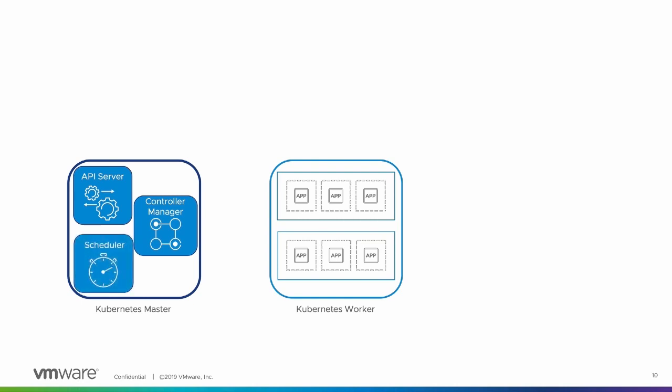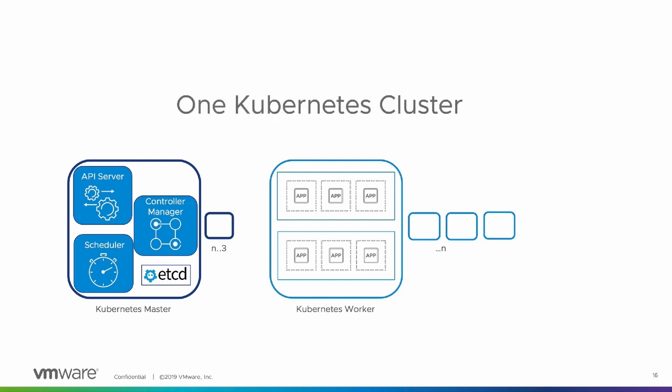The scheduler watches for new pods as they are requested and created. etcd becomes our database — it saves the current state of the cluster. The control plane of Kubernetes can scale as well. There are more complex configurations, such as front ending additional master nodes with a load balancer, but etcd will replicate changes across the master nodes in a highly available situation. The amount of worker nodes needed is based on the resources needed to run the applications, and these can scale as needed. All of this combined represents a single Kubernetes cluster, and at the infrastructure level, these are all virtual machines running on top of vSphere.